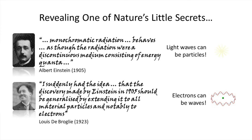Then things got seriously messed up by one of my heroes of this period: Louis de Broglie, who in 1923 had the idea that Einstein's 1905 discovery should be generalized by extending it to all material particles — specifically electrons. Electrons are the negatively charged particles that circulate around the nuclei of atoms. We know about electrons — every time you plug something into mains electricity you get a flow of electrons. We tend to think of electrons as small, contained bundles of electrically charged matter, but what de Broglie was saying in 1923 is: maybe electrons can be waves. This is a depiction of an electron wave formed around the nucleus of an atom.